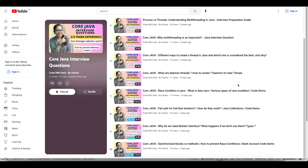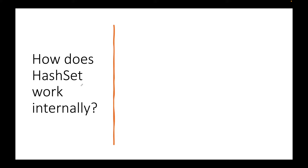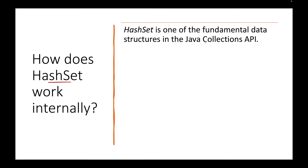We are doing Java interview questions as part of this series. Today's question is: how does HashSet work internally? What is a HashSet? It is a part of the Set interface in Java. In simple words, it is a data structure which guarantees uniqueness of elements, which means it does not allow any kind of duplicates.